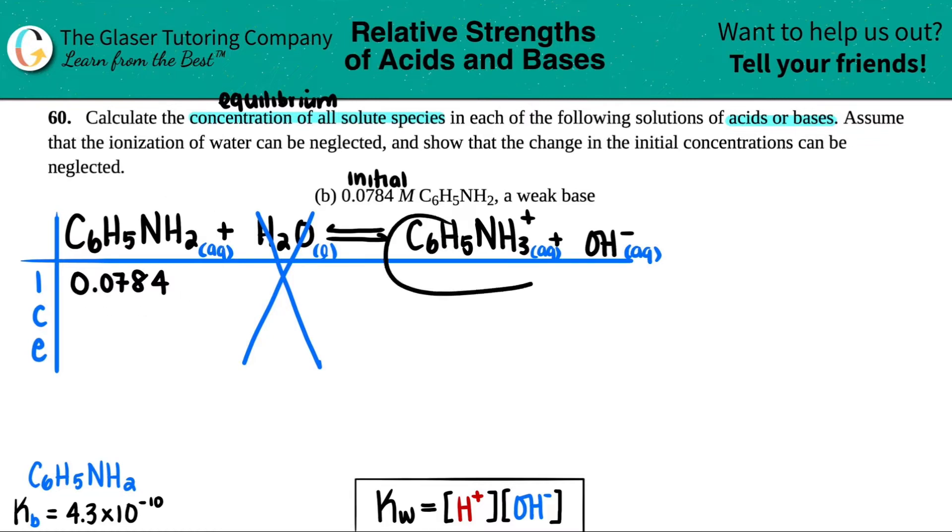But now the question is, did we start off with any of these products? Not that they said, they just told us that we started off with that. So I'm just going to say that we started off with none here and none here. C stands for change, the change in the concentration as you go to equilibrium from initial. Now, technically, you can only go up from nothing. You can never have a negative molarity. So on the product side, we can only have plus and plus, which means that the reactants are minus. We don't know how much we increased by. So pick a variable, any variable, but we always choose x. So minus x, plus x, and plus x.